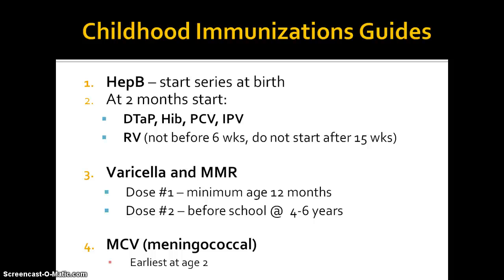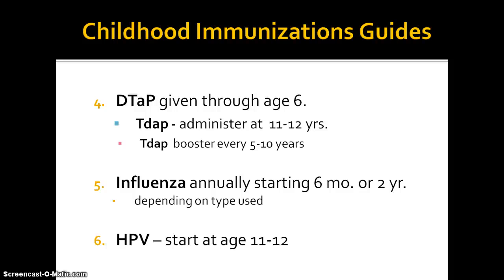The varicella and measles, mumps, and rubella vaccines are both live virus vaccines — that's an important thing to know. They have to be reconstituted to give them and they have living virus in them. Both of those vaccines are scheduled with the first dose at 12 months of age but not a day before, and the second dose before the child enters school at age four or five years old. The meningococcal vaccine can be given as early as age two, but we more often see it being given at 11 or 12 years of age.